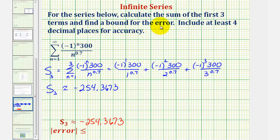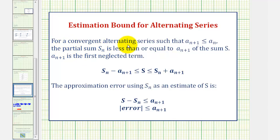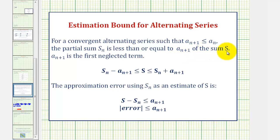Now to find a bound for the error — for a convergent alternating series such that A sub N plus one is less than or equal to A sub N, which is our case, the partial sum S sub N differs from the infinite sum S by no more than A sub N plus one, where A sub N plus one is the first neglected term.